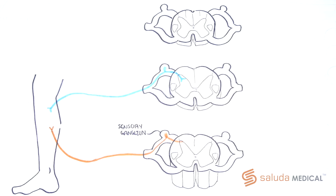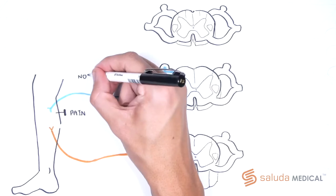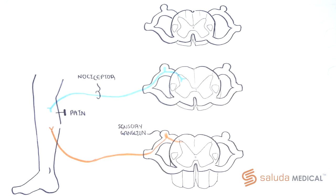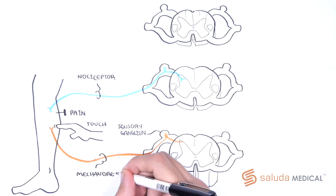The principal sensory fibres we are interested in for this topic are fibres that carry information concerning pain, called nociceptors, and non-nociceptive mechanoreceptor fibres which carry information relating to touch.